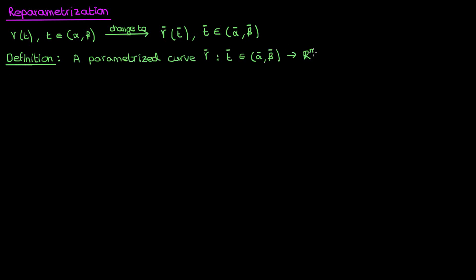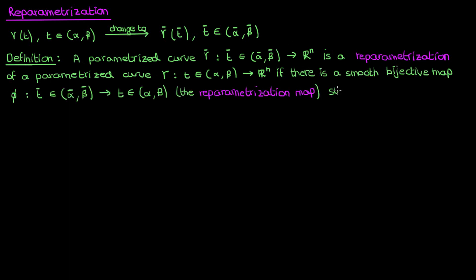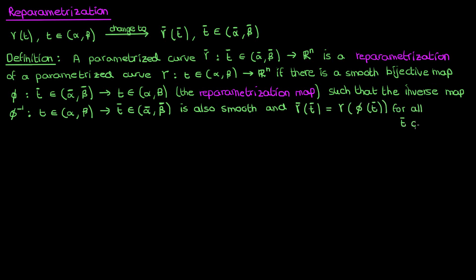A parametrized curve γ̄ is a reparametrization of γ if there is a smooth bijective, or one-to-one map φ, which converts t̄ to t, such that the inverse map φ⁻¹, which converts t to t̄, is also smooth, and γ̄ can be expressed as γ(φ(t̄)) for all t̄ in the open interval between ᾱ and β̄. Note that because we're working with a bijective map φ with a smooth inverse, this also means that γ can be thought of as a reparametrization of γ̄.